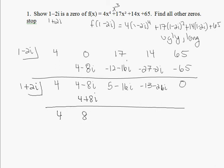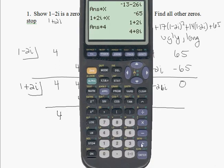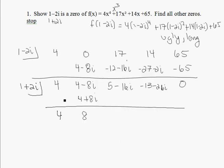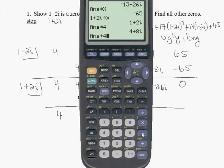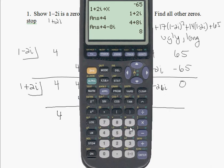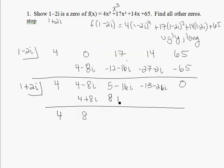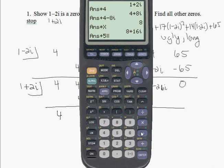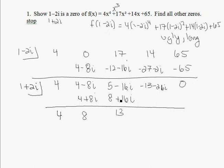I add those two, I get 8. I'm adding 4 minus 8i and 4 plus 8i, I get 8. I multiply 8 times 1 plus 2i, so that's times x, which is 8 plus 16i. Add those two, I get 13. Add 5 minus 16i, so 5 minus 16i is 13.